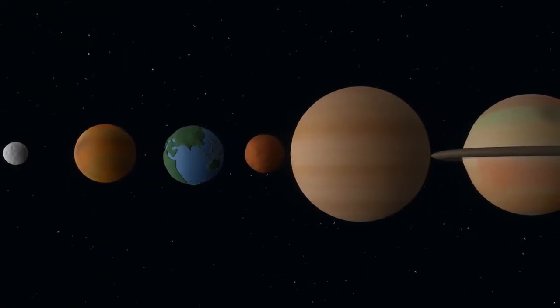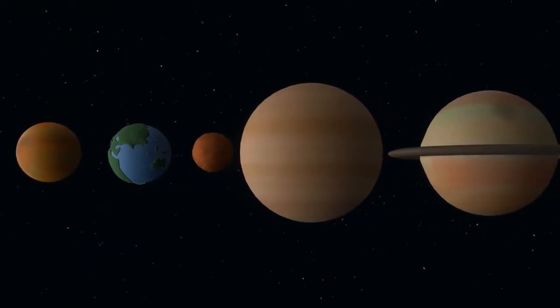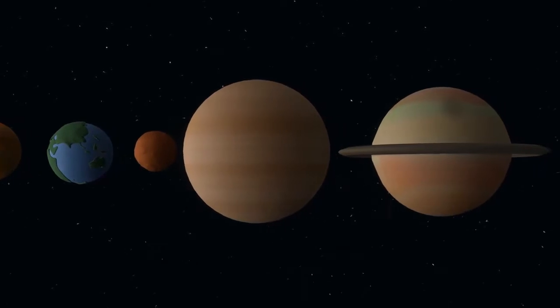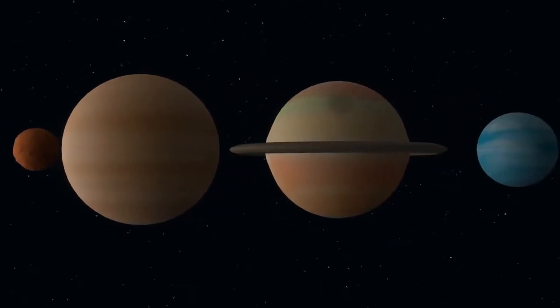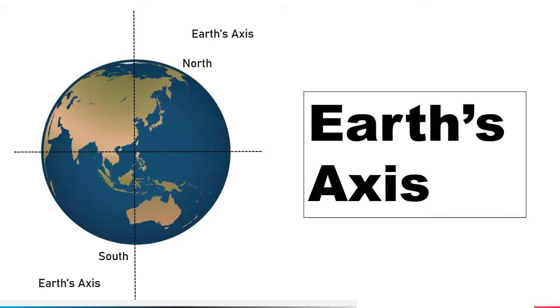Each planet in our solar system rotates on its axis. That's why each planet has a north and south pole. These are the two points where an axis meets the planet's surface.